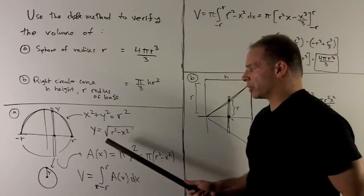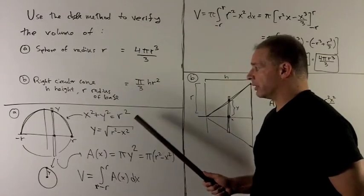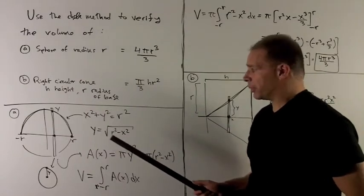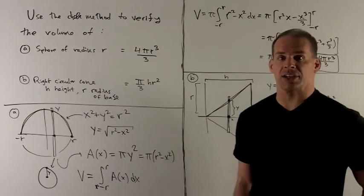then I'll have y equals plus or minus square root of r-squared minus x-squared. And I'll use the positive one, because we only care about the stuff above the x-axis.